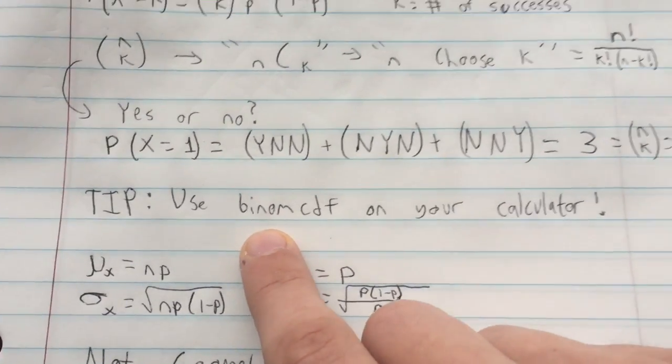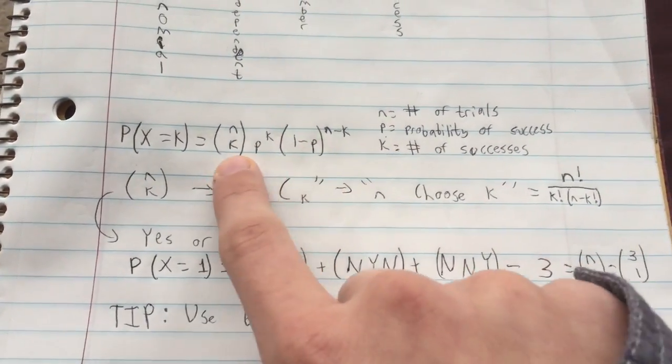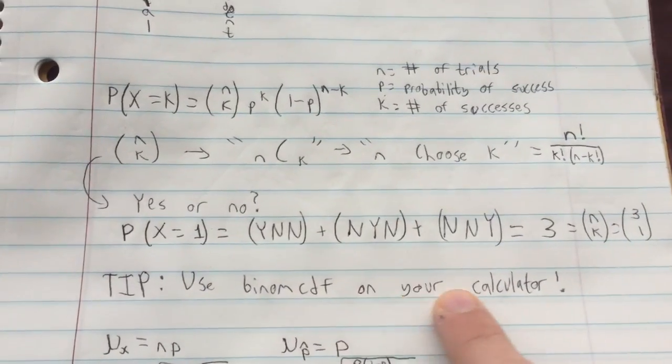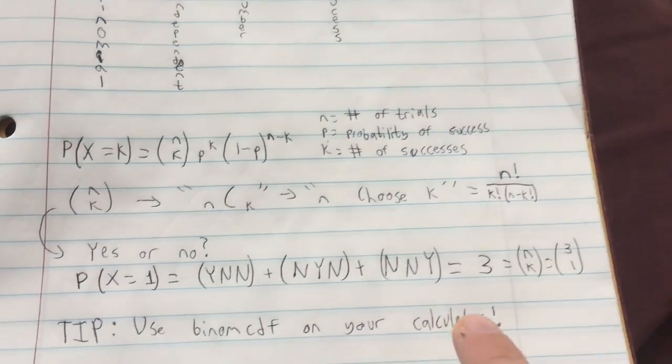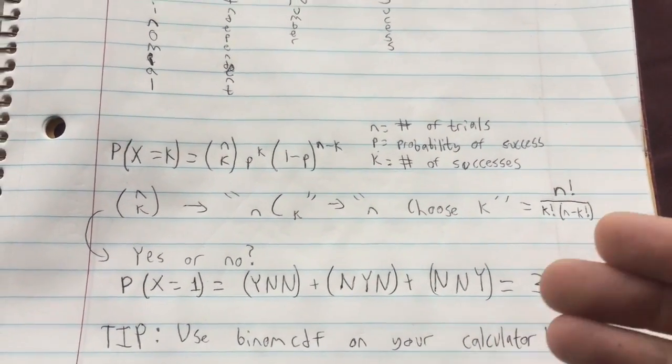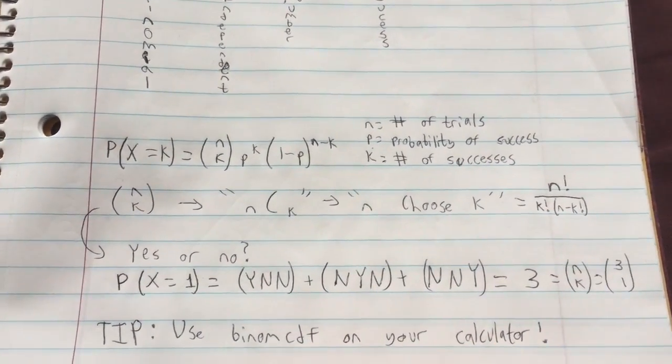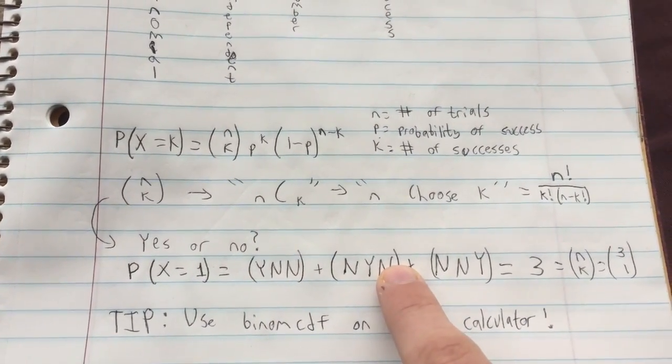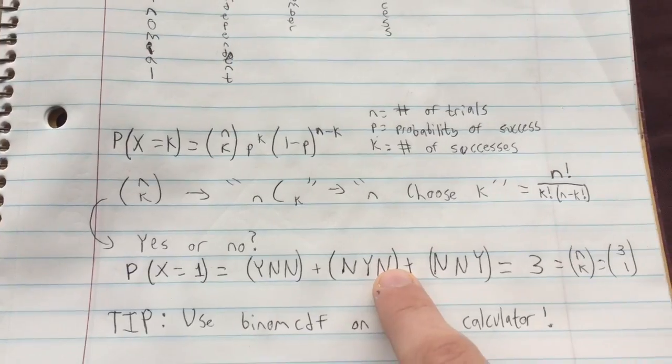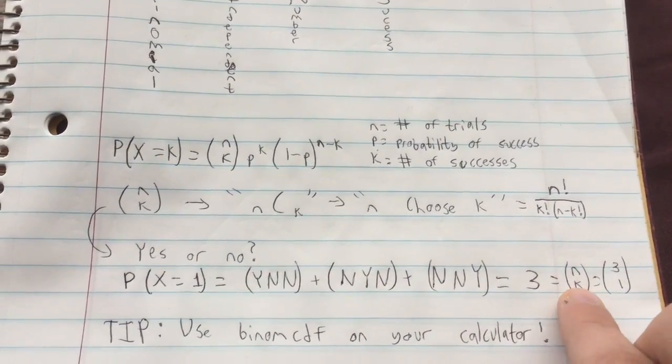Now a tip is instead of doing this whole long process for this formula, just use binomial CDF on your calculator. That will really help you on the AP test to save time. And if you really feel uncomfortable and you have a lot of extra time on the AP test, you could go about using this method to figure out what N C K actually is.